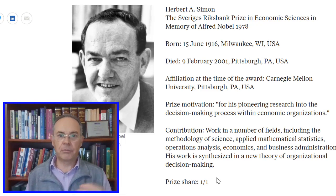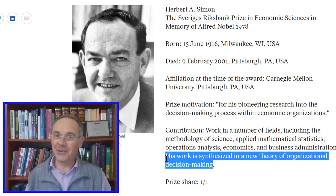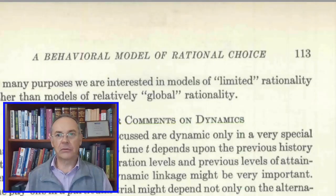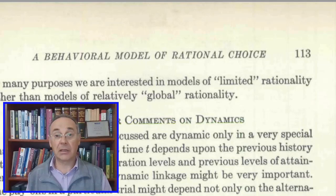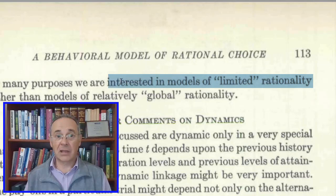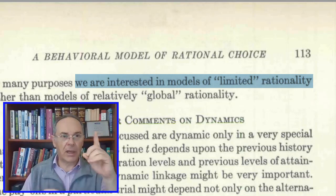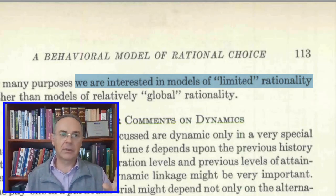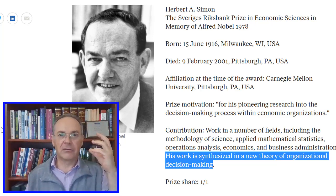Next we'll have a look at Herbert Simon, who again brought together different disciplines, having a very useful application for management. His work is synthesised in a new theory of organisational decision making. One important article is 'A Behavioural Model of Rational Choice.' We assume rationality in most economics, but here he's looking at limited — or bounded — rationality. We don't always have the bandwidth and processing power to deal with all the information available for making decisions. These awards are given to people who break away from the mainstream and bring in new ways of thinking and theorising.